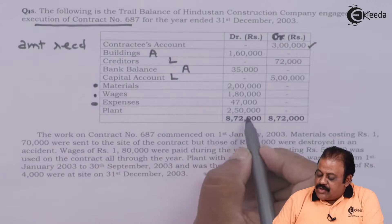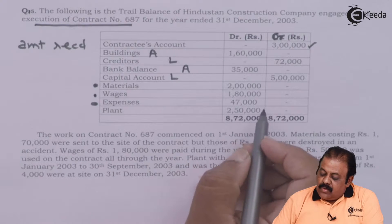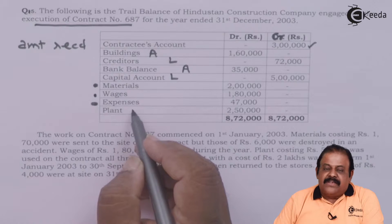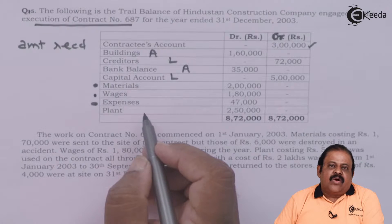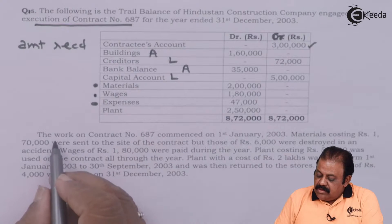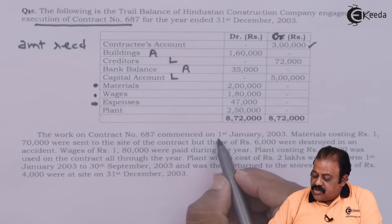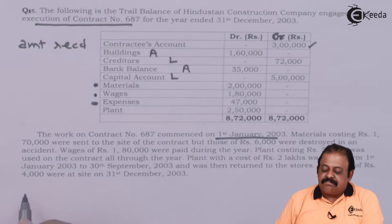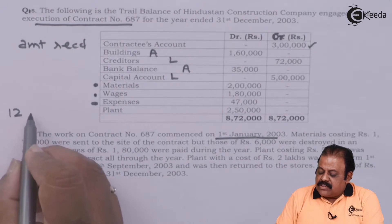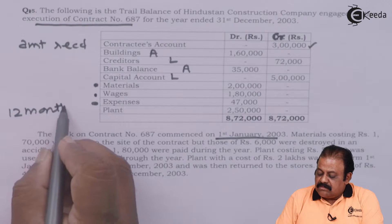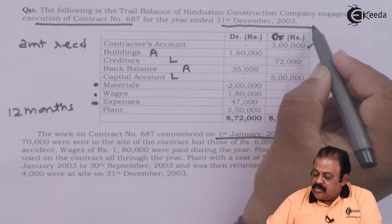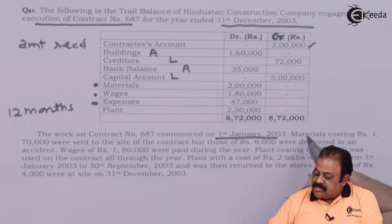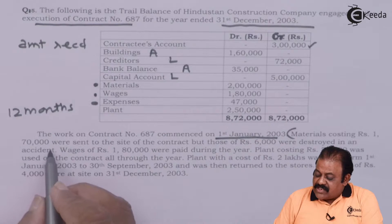We are not sure whether the entire material, wages, expenses, and depreciation on plant should all be charged to the contract account — that depends on the further information given in the question. The work on contract number 687 commenced on 1 January 2003, meaning it covers a period of 12 months from 1 January to the trial balance date of 31 December 2003.